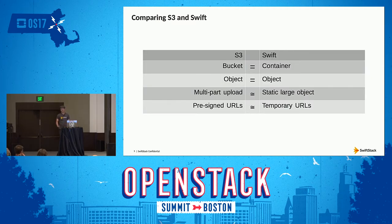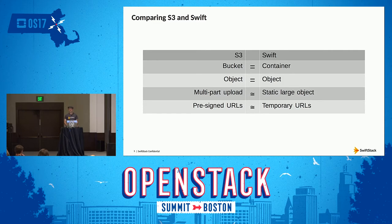So in S3, at the top level you've got your buckets. These map pretty much directly to containers in Swift. There are three major distinctions between the two. In S3 there is a global bucket namespace, so if I create a bucket named 'music', that's it — nobody else can have a bucket named music. Whereas with Swift, that's not the highest level. Above that is an account, and each tenant gets their own account, so within that you can create your own containers willy-nilly. You can have music, I can have music — those two containers are completely separate.